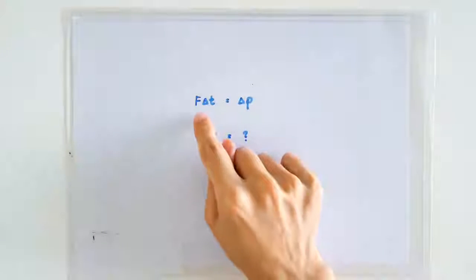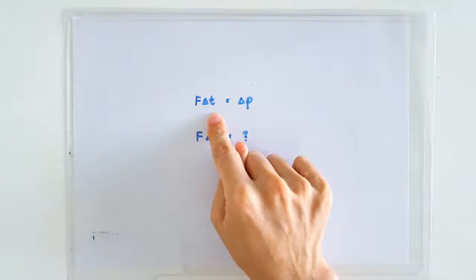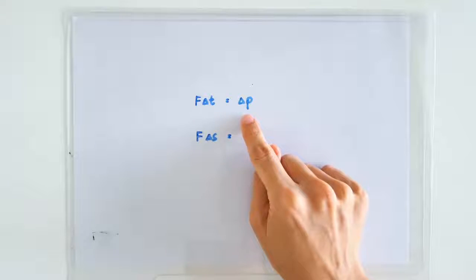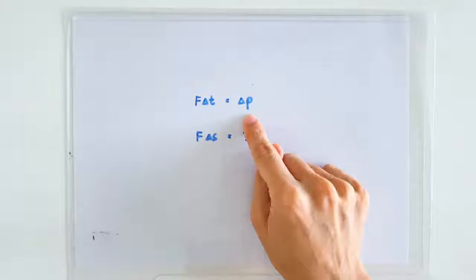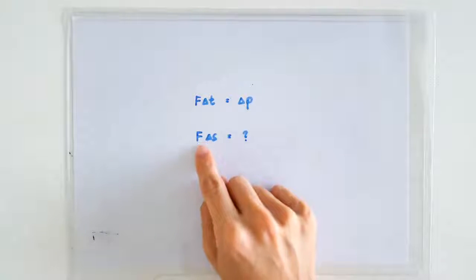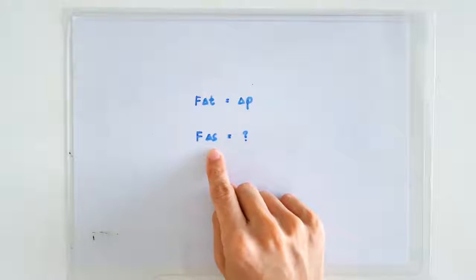Hello, you know that F times delta t is a quantity called impulse, which can be equated to the change in momentum. What about F times delta s? Does it have any physical meaning?